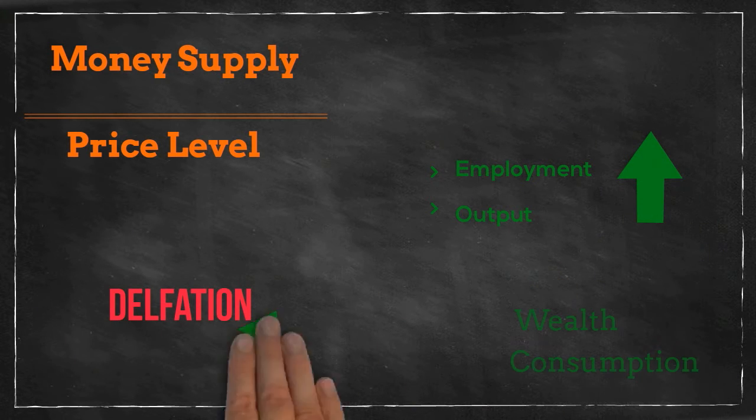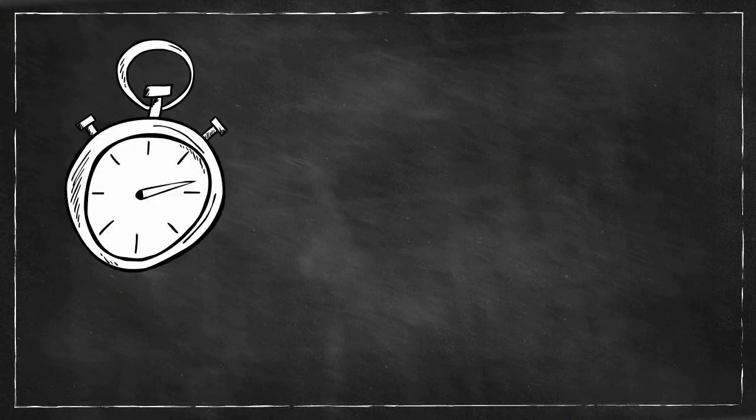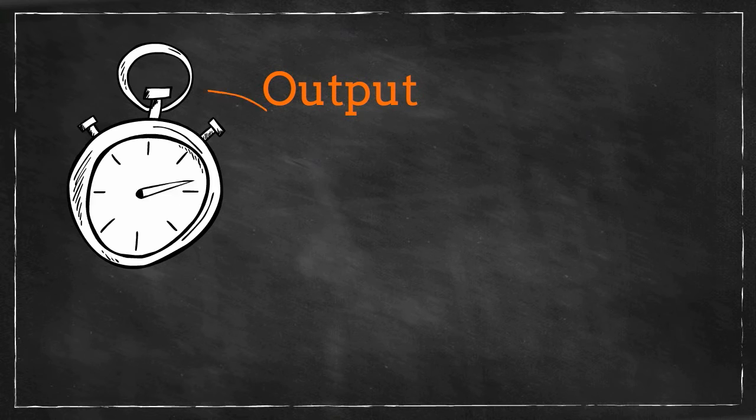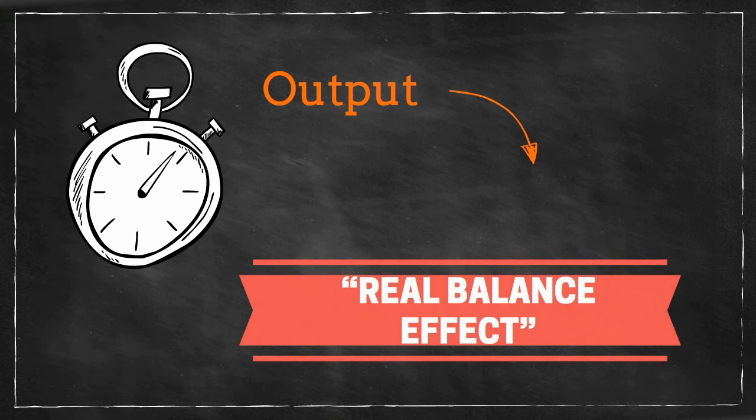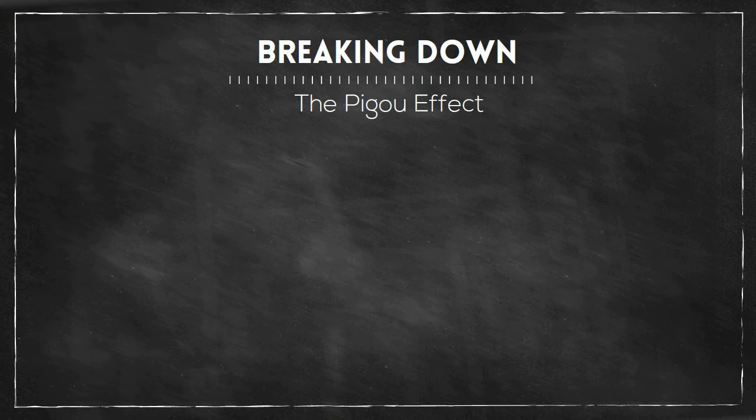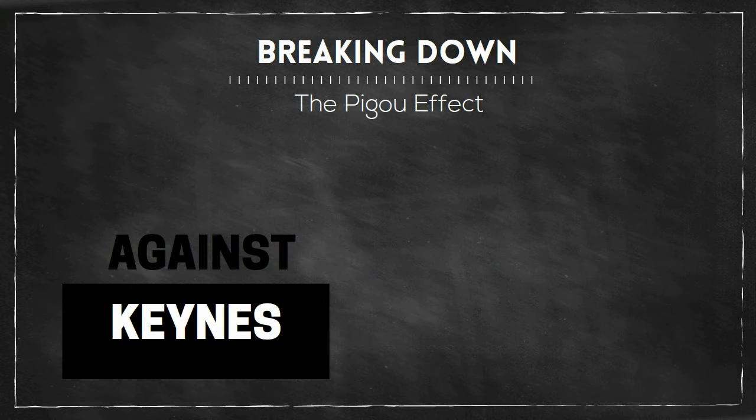As such, the Pigou effect states that when deflation occurs in relation to prices, employment and thus output will grow due to an increase in wealth and thus consumption. On the other side, with an inflation of prices, employment and output will go down due to a decreasing consumption. Also known as the real balance effect.